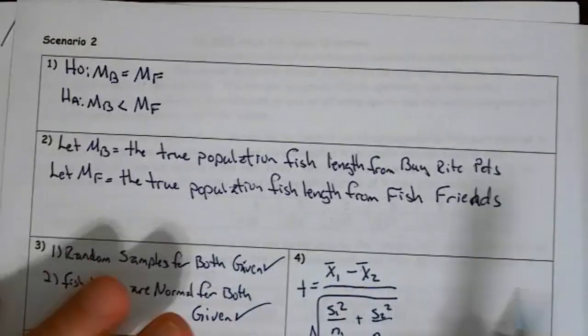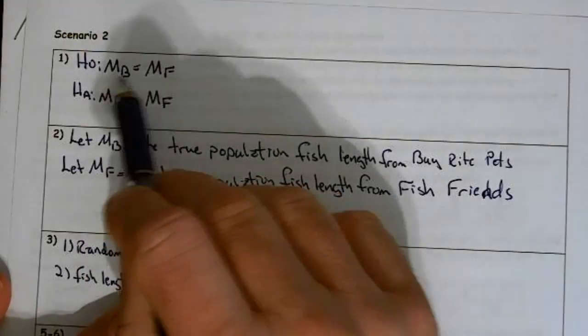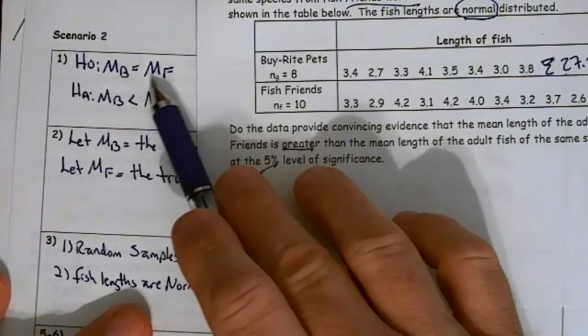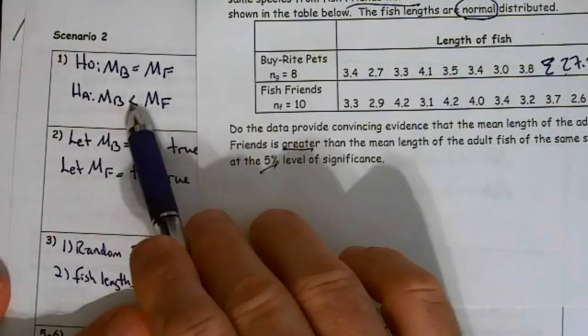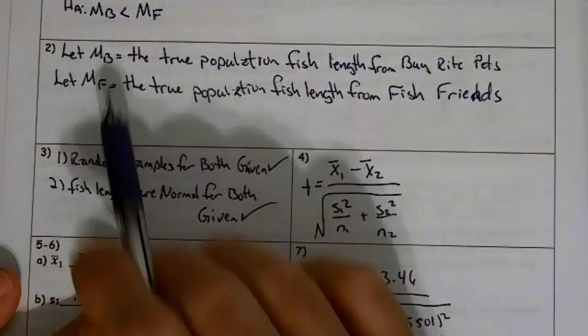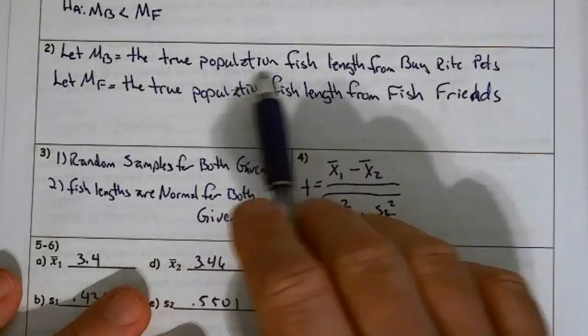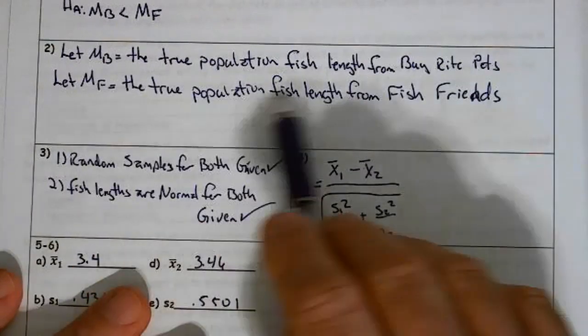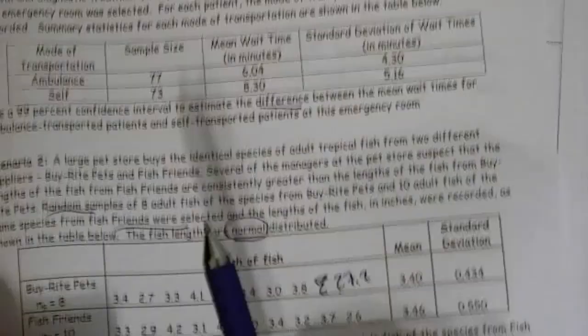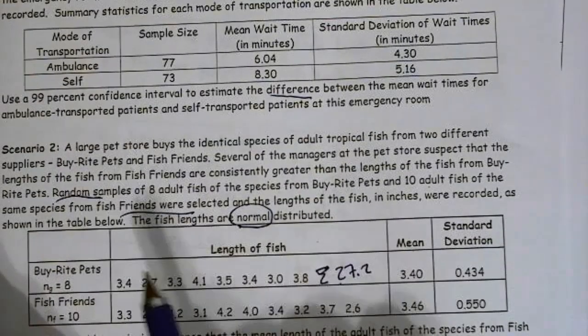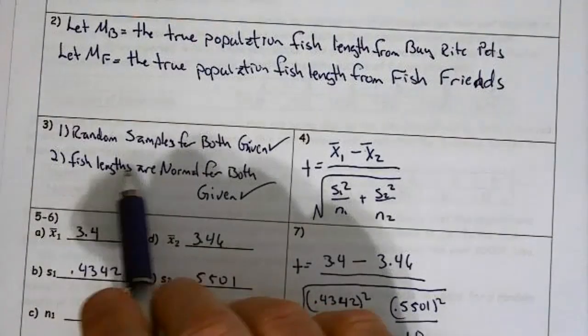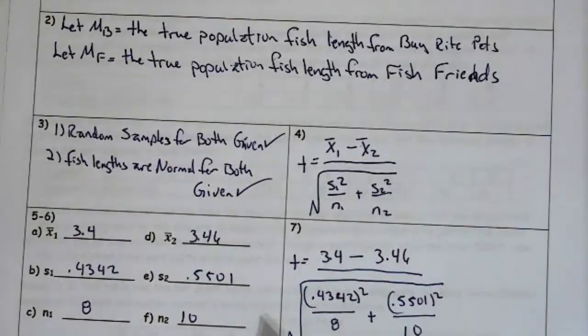So, here we go. H0, mu B equals mu F. So, mu B equals mu F, and I could have done mu 1 and mu 2, but mu of Byrite Pets equals mu of Fish Friends. Mu of Byrite Pets is less than mu of Fish Friends. In other words, mu of Fish Friends is greater than mu of Byrite Pets. I need to go ahead and define them. Let mu B equal the true population fish length from Byrite Pets. Let mu F equal the true population fish length from Fish Friends. Random samples for both were given. Fish lengths were normal, and that was also given. Random samples for both of them, and the fish lengths are normally distributed. But I need to make sure I address it.